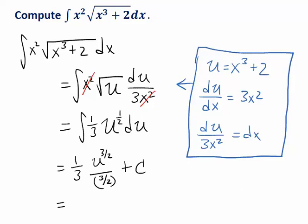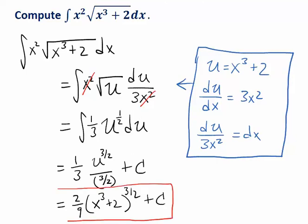And then let's clean this up. I have one third times something over three halves. Dividing by three halves is the same as multiplying by the reciprocal two thirds. One third times two thirds is two ninths. And then instead of u to the three halves, we'll go back to writing things in terms of our original variable. So replace the u with x cubed plus two. And that's our general antiderivative, which again we could check by calculating the derivative of this using the chain rule. And if we do, we'll see we get exactly what we started with.